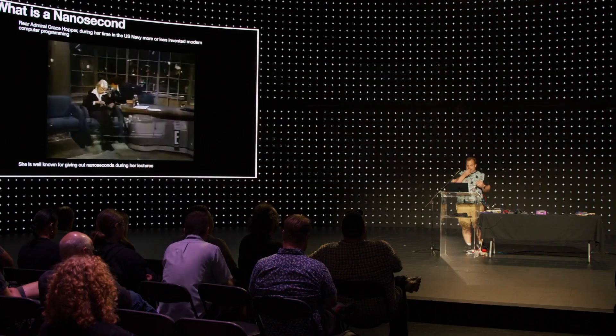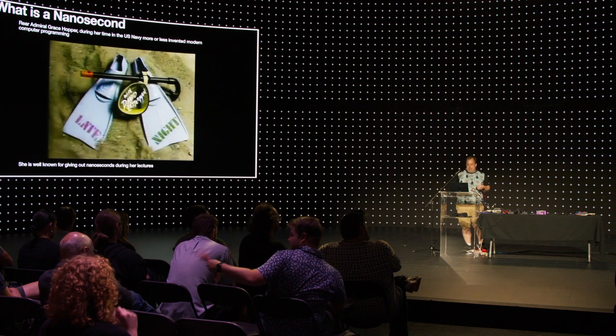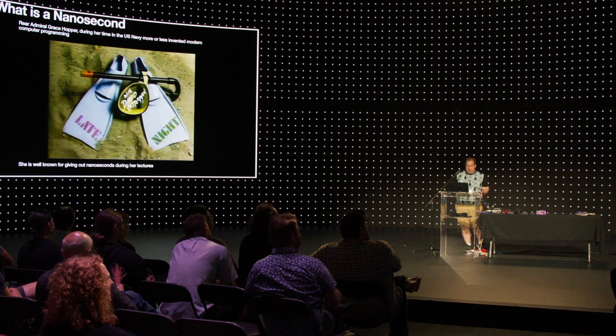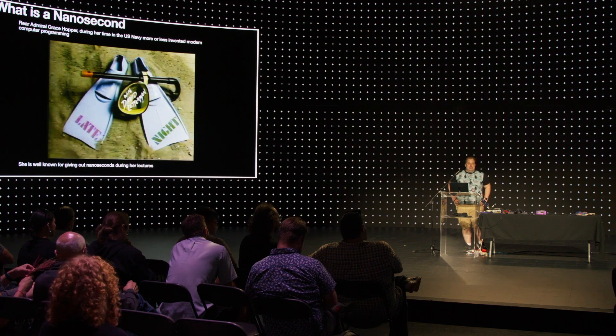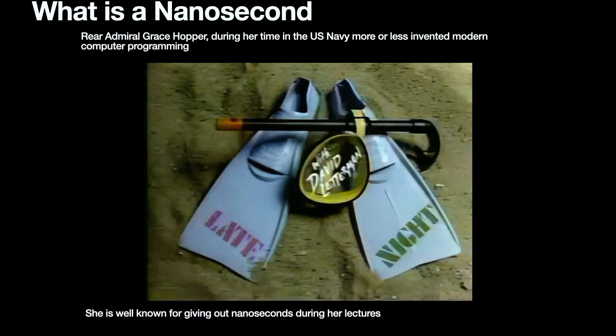Admiral Grace Hopper basically invented modern computer programming and other things, went on David Letterman's show, and passed out nanoseconds. You can use them as friendship bracelets, but it's always nice to think you can't beat the speed of light. A fun fact from preparing this presentation: which is faster, copper or fiber? It turns out for most reasonable distances, the speed of electricity through copper is actually faster than the speed of light through OM3 fiber. There are other reasons to use fiber, but raw speed isn't actually one of them.